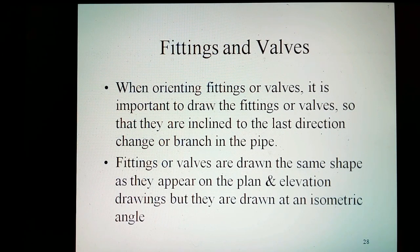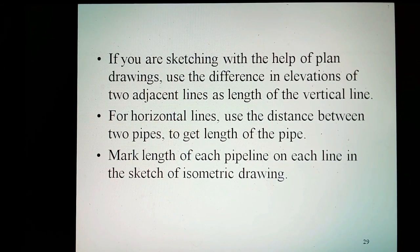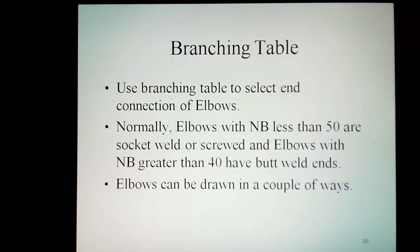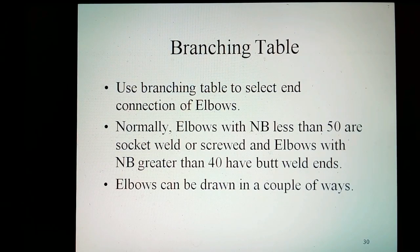If you are sketching with the help of plan drawings, use the difference in the elevations of two adjacent lines as the length of the vertical line. For horizontal lines, use the distance between two pipes to get the length of the pipe. Mark the length of each pipeline on each line in the sketch of the isometric drawing. Use the branching table to select end connections of elbows — normally, elbows 50 NB and below are socket weld or screwed, and elbows greater than 40 NB have butt weld ends.